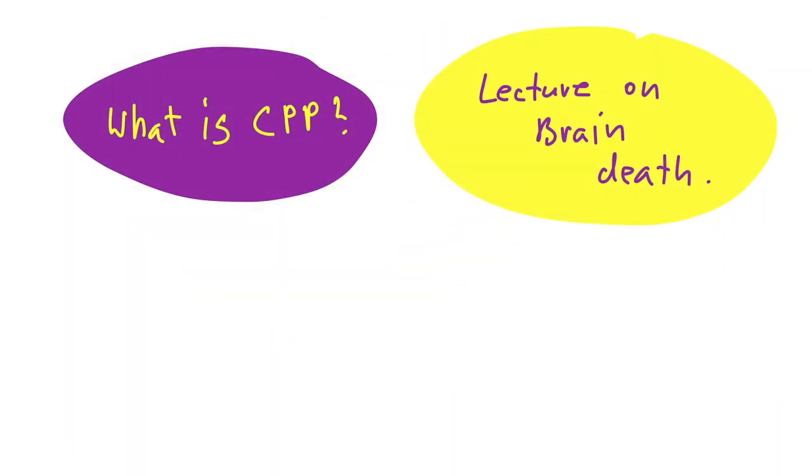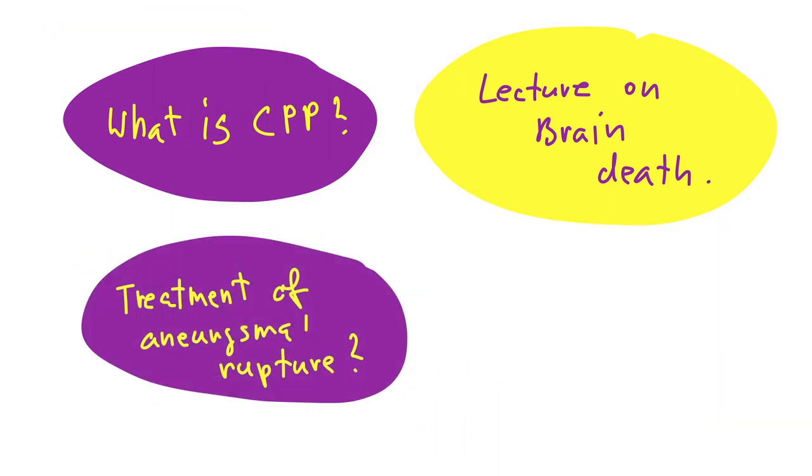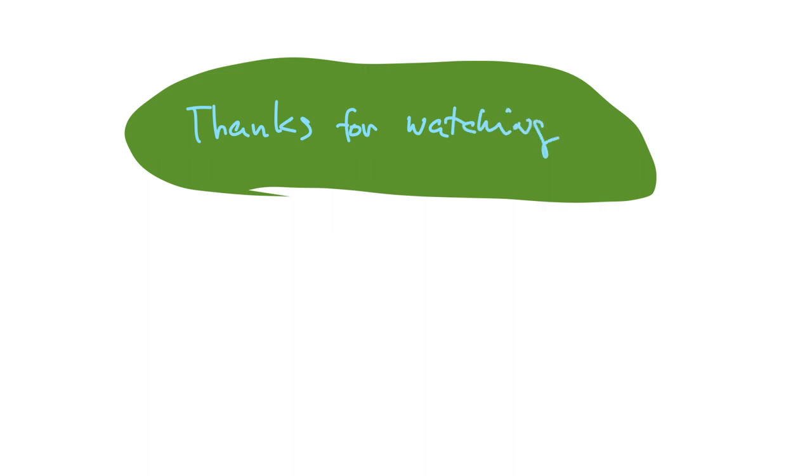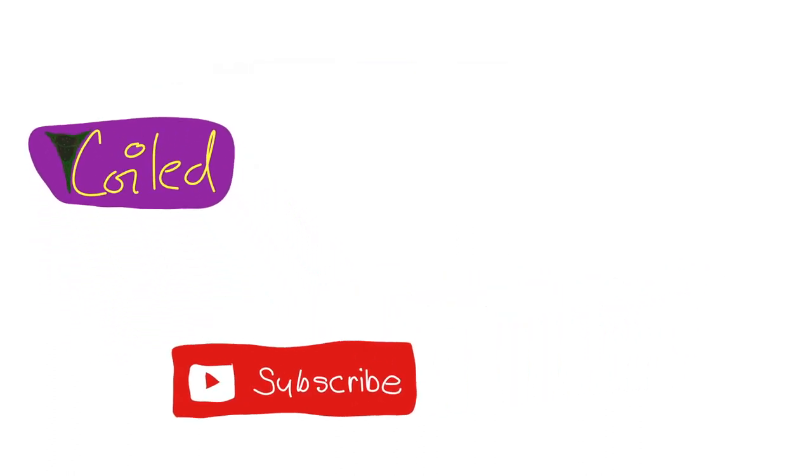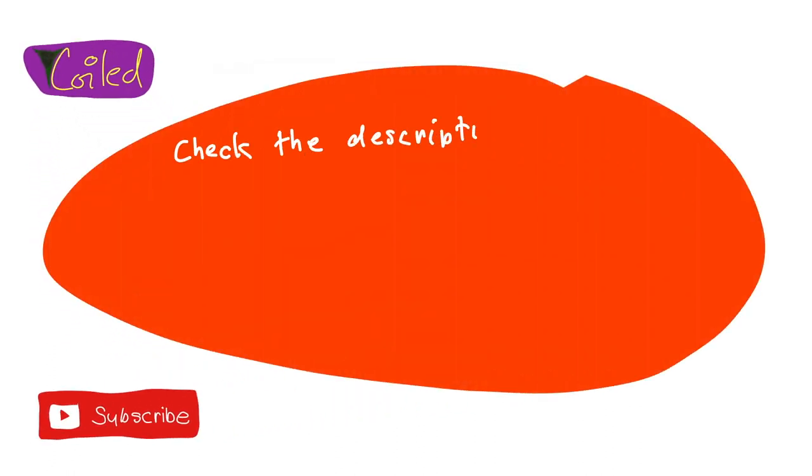If you want to find out what is cerebral perfusion pressure, just check the lecture on brain death. If you want to know something about treatment of aneurysmal rupture, just check the lecture on subarachnoid bleeding. Do not forget to subscribe and ring that bell. And as always, check the description below for supplementary questions and other stuff.